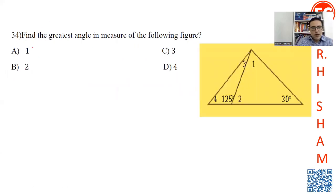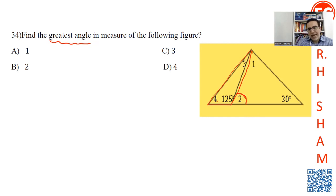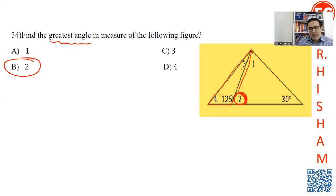Question 34: Find the greatest angle. Don't calculate all the measures; look at the exterior angle. Angles 4 and 3 are interior angles of the triangle, but angle 2 is an exterior angle. The exterior angle equals the sum of the two non-adjacent interior angles, so it is greater than either of them. You'll find that the greatest angle is angle 2.